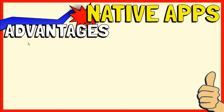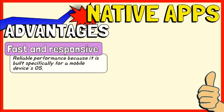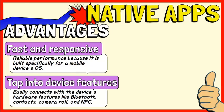Let's look at the significant advantages of native apps. Native apps are faster and more reliable in terms of performance because of their singular focus. They are built specifically for a mobile device's operating system. Native apps can connect with a device's hardware features like Bluetooth, phone book contacts, camera roll, near-field communication, and more.